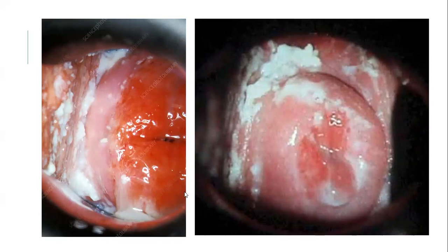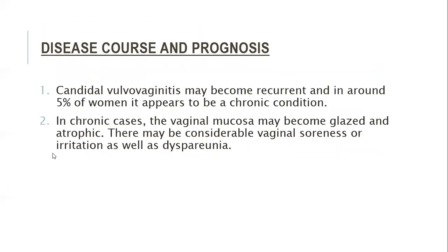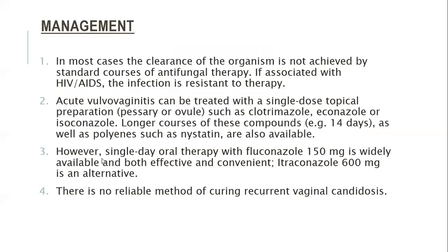You can see genital erythema, mucosal erythema, and white curd-like pseudomembrane as seen in the oral mucosa. The differential diagnosis of leukorrhoea and vaginal candidiasis includes Trichomonas infection (which produces watery brown discharge, while candidiasis produces creamy white discharge), bacterial vulvovaginitis, psychological leukorrhoea in pregnancy, and dermatoses affecting the vulva such as psoriasis, contact dermatitis, and lichen sclerosus. Candidal vulvovaginitis may become recurrent, and in around five percent of women it appears to be a chronic condition. In chronic cases the vaginal mucosa may become glazed and atrophic with considerable vaginal soreness, irritation, and dyspareunia.